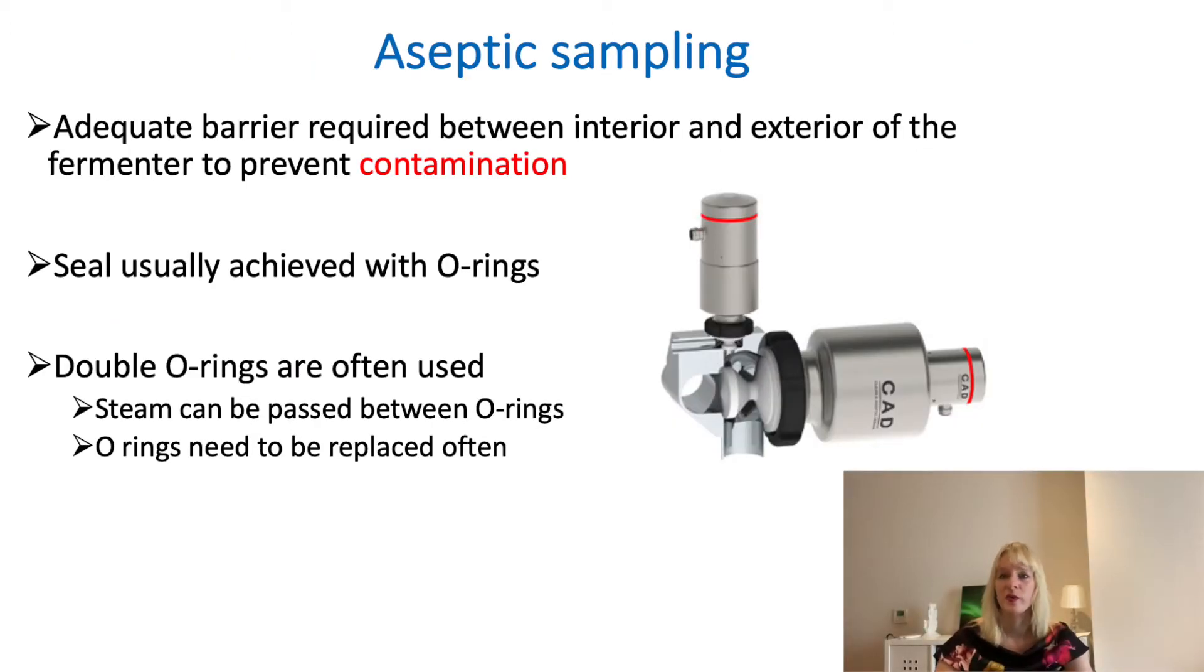Another way of preventing contamination is using aseptic sampling. Aseptic sampling often involves at least one O-ring, usually two of them, so you really separate out the interior of the fermenter and the outside. You can use steam to actually clean those, so you sterilize them in between, but the O-rings make sure that you really seal off the reactor. What's the most common problem here? People not replacing O-rings. If you work with that kind of principle which is very good to prevent contamination, they need to be maintained quite on a regular basis.